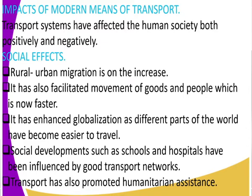How has the modern means of transport affected people socially? Socially, we look at demographics and population. First, there is rural-urban migration — modern transport has led to the development of towns. People are migrating from rural areas to urban centers, most probably to seek work. It has also facilitated the movement of goods and people, making travel from point A to point B faster.